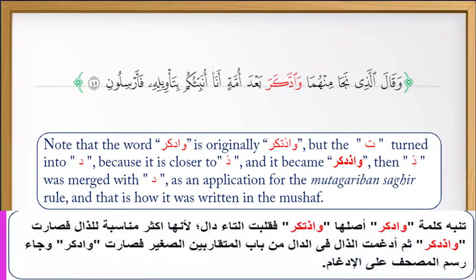Please listen to the ayah: وَقَالَ الَّذِي نَجَا مِنْهُمَا وَادَّكَرَ بَعْدَ أُمَّةٍ أَنَا أُنَبِّئُكُمْ بِتَأْوِيلِهِ فَأَرْسِلُونَ. The word وَادَّكَرَ is an example of متقاربين صغير.